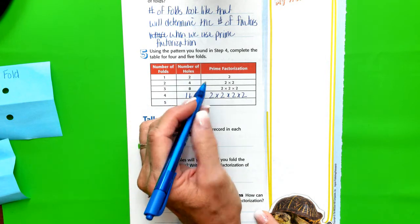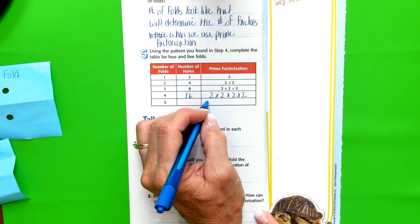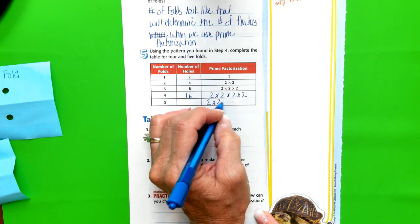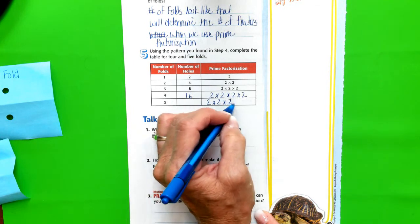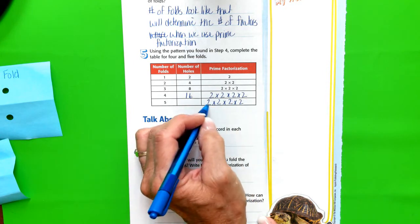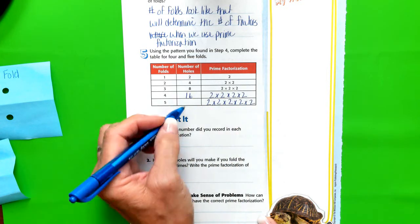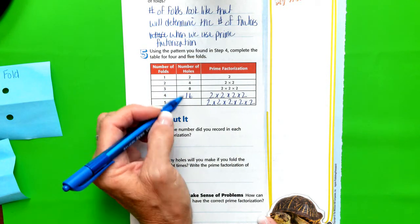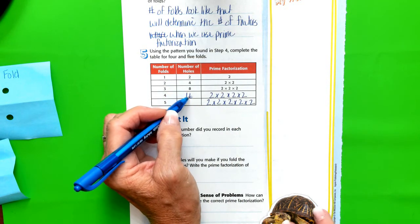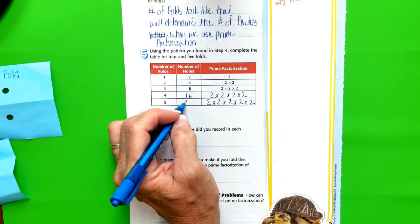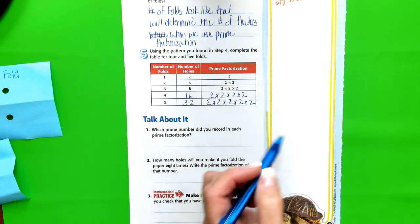So now we have five folds. So that means we're going to have two times two times two, three times two, one, two, three, four, and one more. So we're going to double 16, which is going to give us 32. I'm not really sure. Let's work this out in our space.